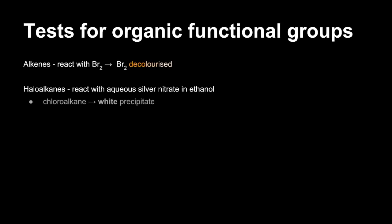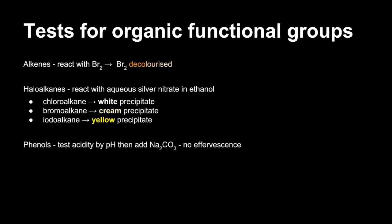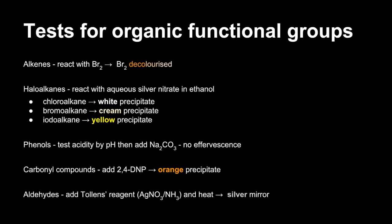We'll quickly run through the tests for organic functional groups. Alkenes, you react them with bromine and the Br2 is decolourised. Haloalkanes, you react them with aqueous silver nitrate and ethanol. Chloroalkanes will give you a white precipitate of silver chloride. Bromo will give you a cream precipitate of silver bromide. Iodoalkanes will give you a yellow precipitate of silver iodide. Phenols. How do you check you've got a phenol? The first thing you do is test that it's acidic by running a pH test. Then you would add sodium carbonate. If you don't get any effervescence or fizzing, then it's a phenol. Carbonyl compounds, you add 2,4-DNP and you should get an orange precipitate. Aldehydes, you add Tollens reagent. That's ammoniacal silver nitrate solution. You heat it up and you should get a silver mirror.